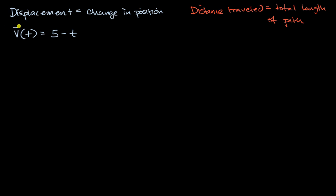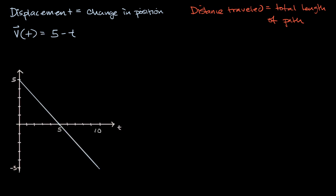Sometimes you will see a vector quantity like this have a little arrow on it, or you will see it bolded. Let's plot what this velocity function actually looks like. Time is in seconds and velocity is in meters per second. At exactly time zero, this object is traveling at five meters per second to the right. But then it keeps decelerating at a constant rate. Right at five seconds, the particle has no velocity, and then it starts having negative velocity, which you could interpret as moving to the left.